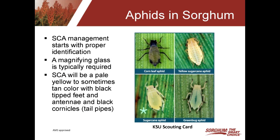The first step in controlling the aphid is properly identifying it. There are four aphids that typically get into sorghum: the corn leaf aphid, which typically is not much of an issue; the yellow sugarcane aphid; the green bug aphid; and now the sugarcane aphid. What really distinguishes the sugarcane aphid from the others is its body color — it's going to be a yellow to even tan or whitish color sometimes. The very distinguishing characteristics are the black cornicles on its back, sometimes referred to as tailpipes. The aphid will also have black feet and black-tipped antennae.